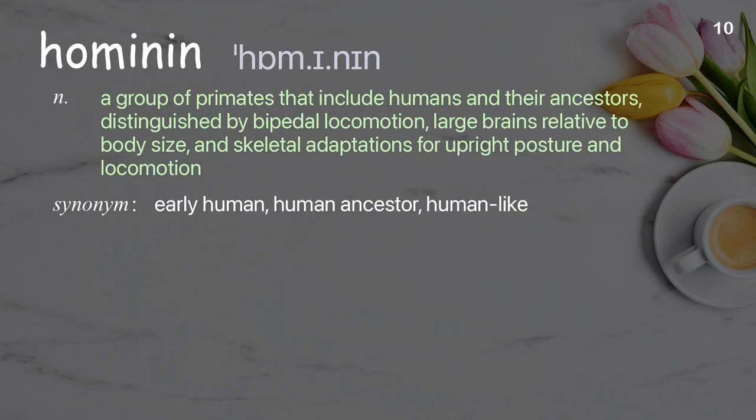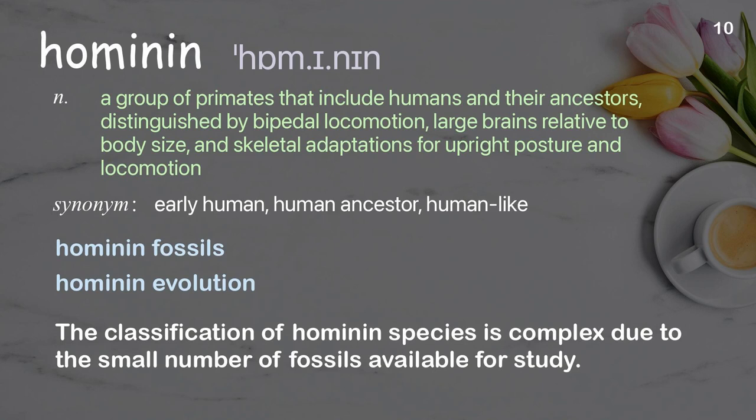Hominin: A group of primates that include humans and their ancestors, distinguished by bipedal locomotion, large brains relative to body size, and skeletal adaptations for upright posture and locomotion. Examples: Hominin fossils. Hominin evolution. The classification of hominin species is complex due to the small number of fossils available for study.